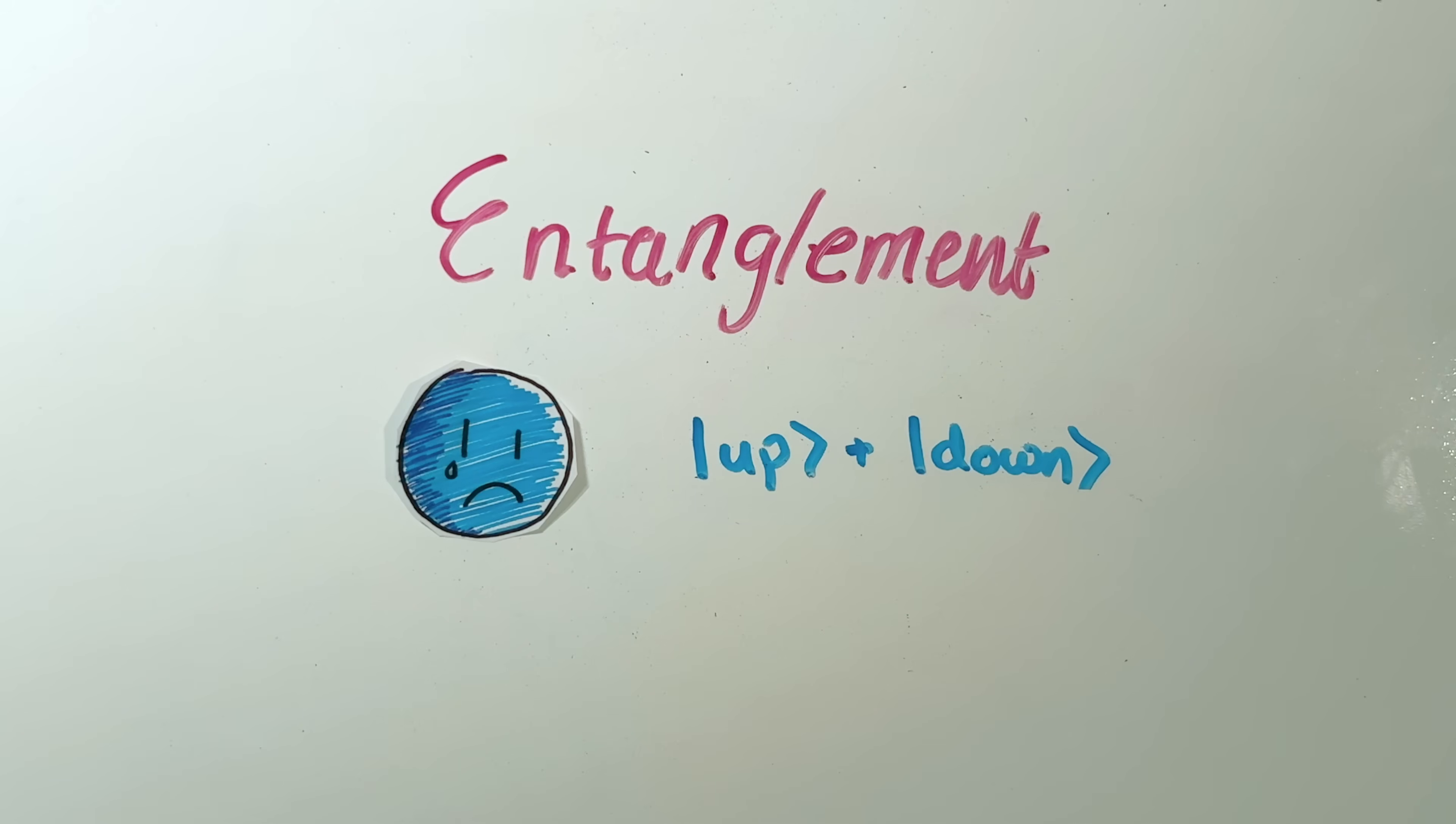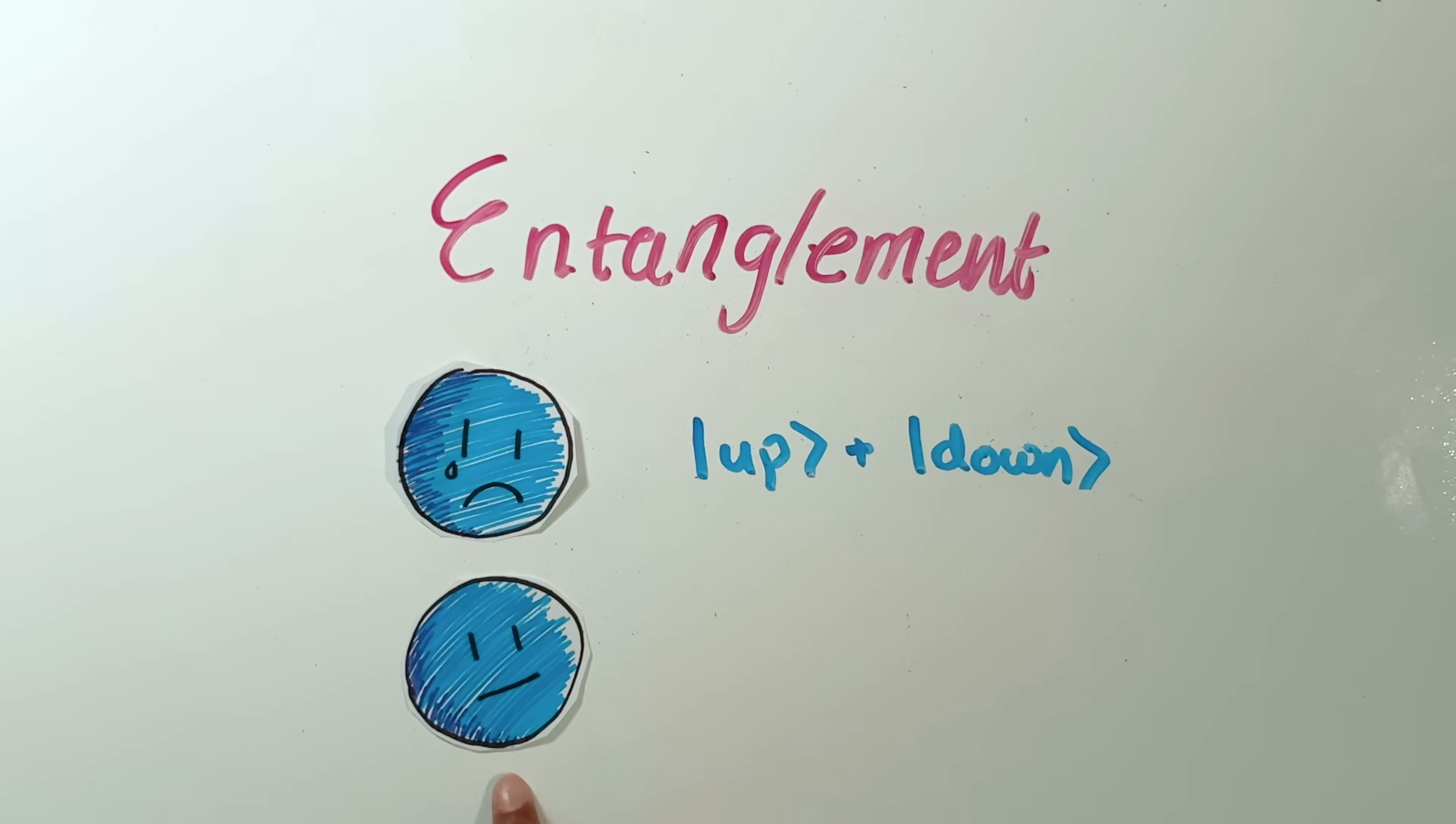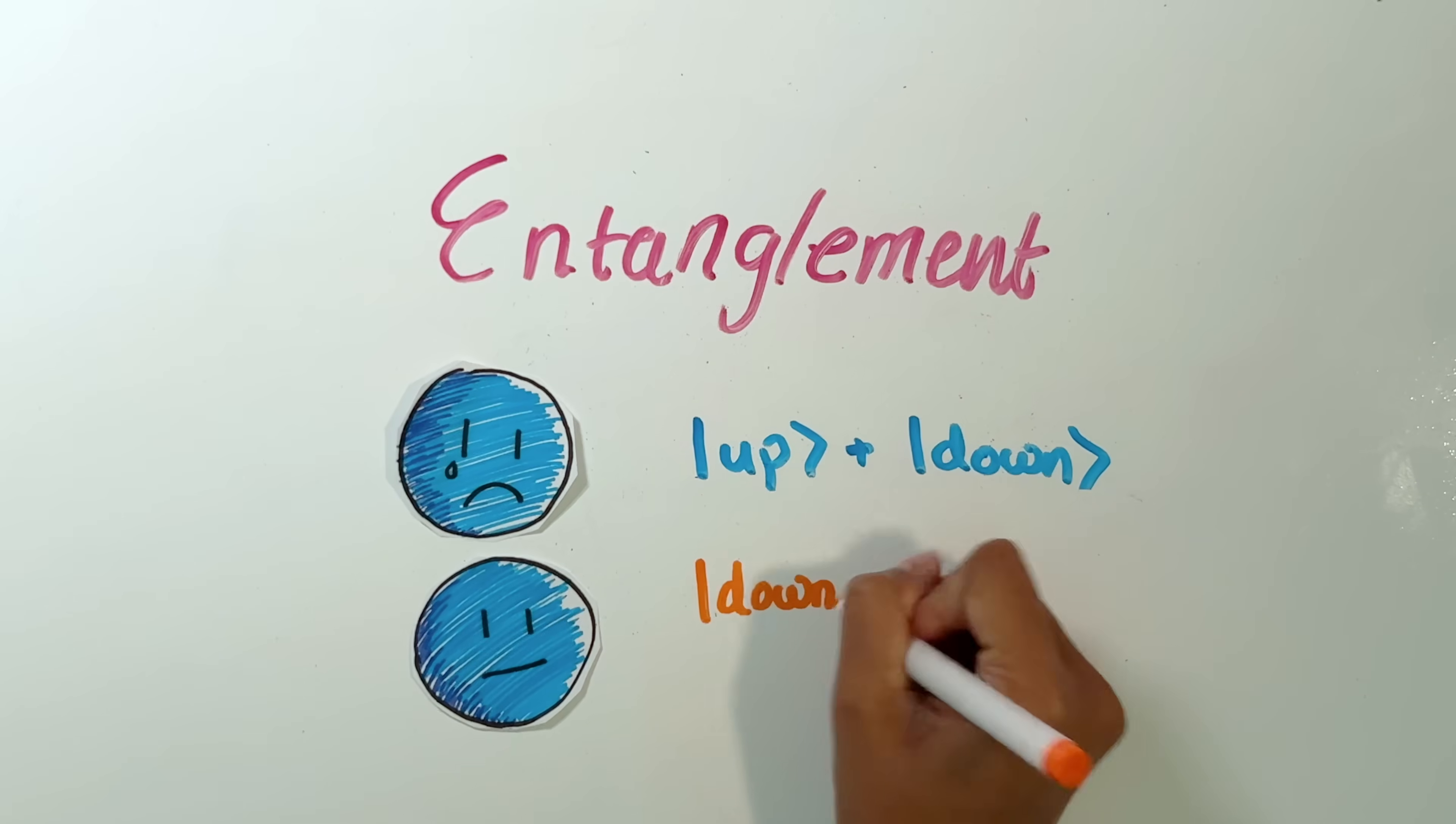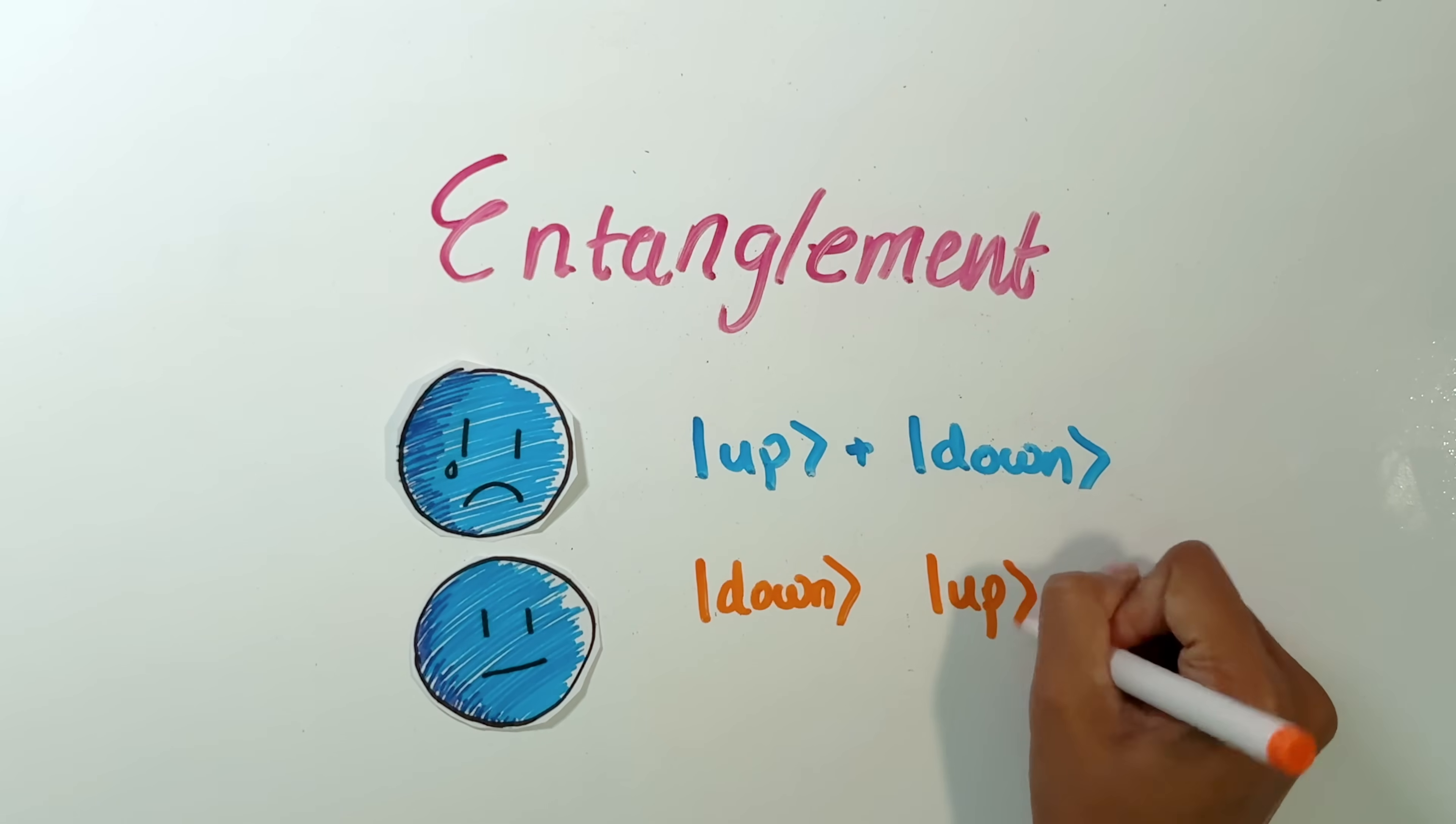Alright, but now at long last, we're going to make some actual entanglement. Now this electron comes flying along and it decides to change its state depending on what the other electron is doing. It says it does not want to be seen dead doing the same thing. So it says that if it sees the other electron up, then it will resolve to be down. On the other hand, if it sees this electron be down, then it will resolve to be up.